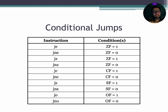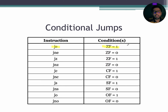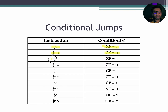The details of commonly used conditional jump instructions along with their respective conditions are visible on the screen. JE stands for jump if equal, for which the zero flag must be equal to 1. JNE stands for jump if not equal, for which the condition is zero flag equals 0. JZ stands for jump if zero — JZ and JE are equivalent. JNZ stands for jump if not zero, and JNZ is also equivalent to JNE.